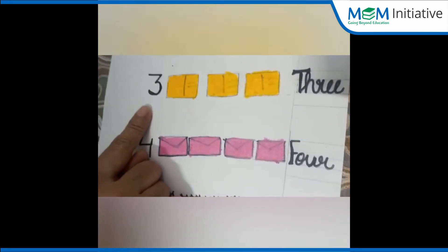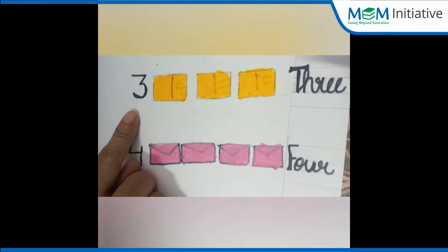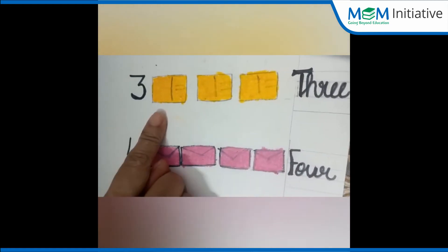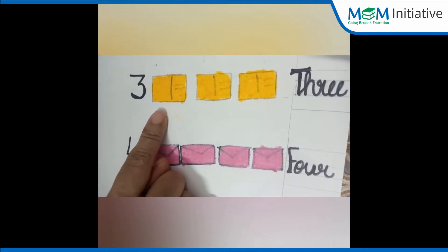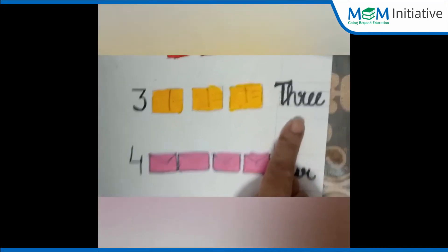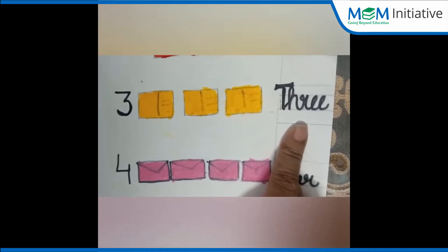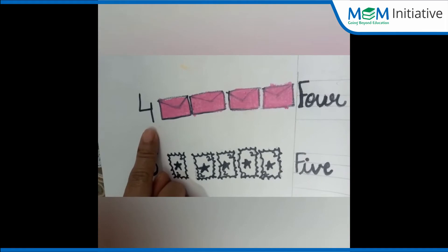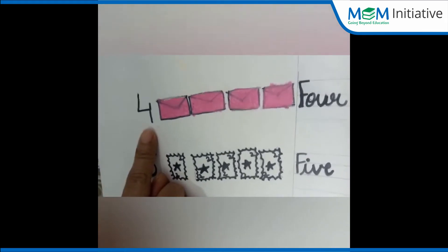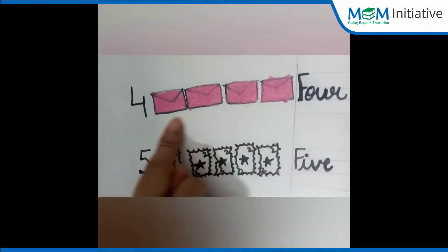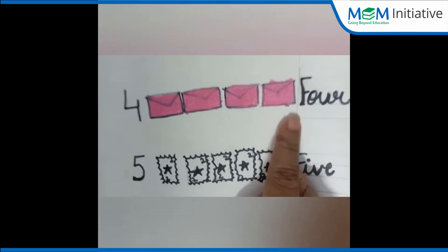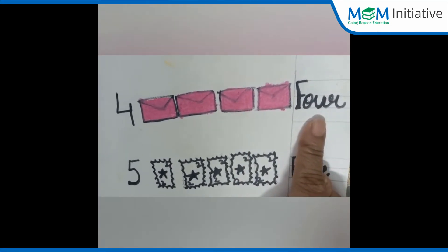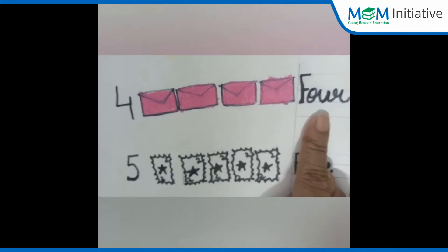Now tell me children, what number is this? Yes, this is number 3. And what are these? These are 3 postcards. And what number name is this? Yes, this is number name 3. Children, tell me what number is this? Yes, this is number 4. And here we have 4 envelopes — ma'am has drawn 4 envelopes. And what number name is this? Yes, this is number name 4.